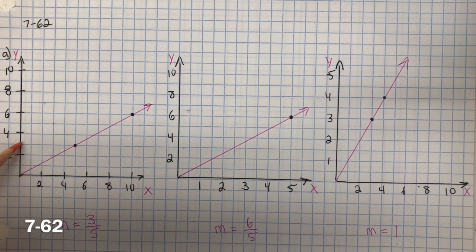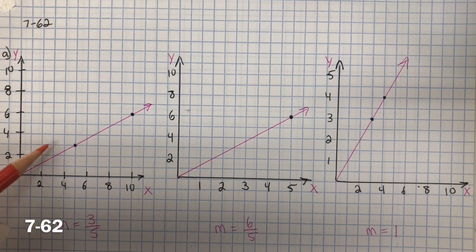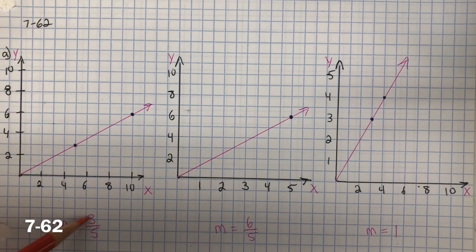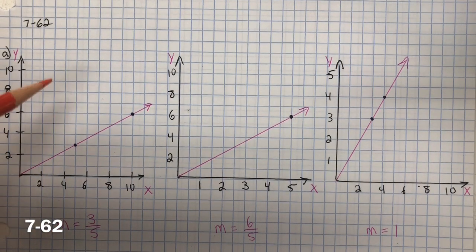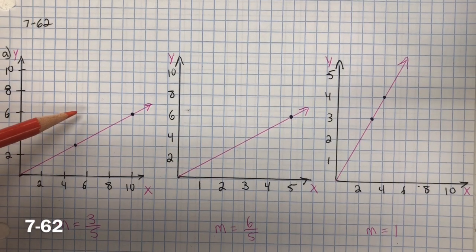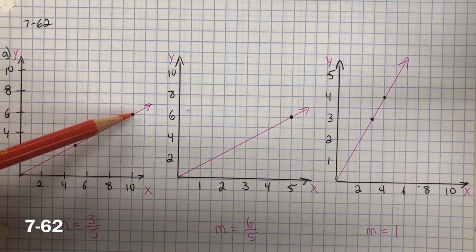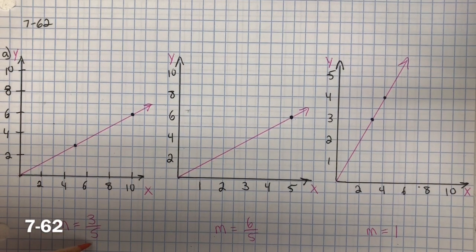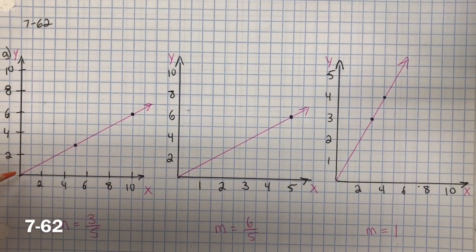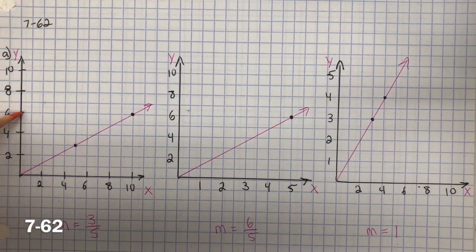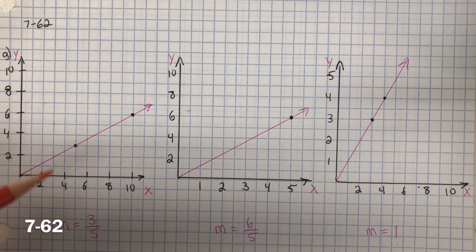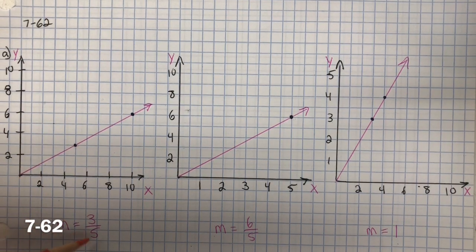So I have a rise of 3 and a run of 5. So the slope is 3 over 5. And I can choose any two lattice points: 3 over 5. I could also choose this lattice point and this lattice point, because this is a rise of 6 and a run of 10. Well, 6 tenths simplifies to 3 fifths.